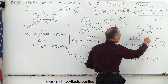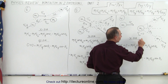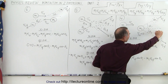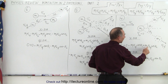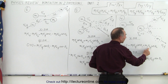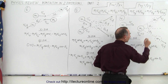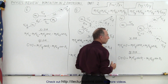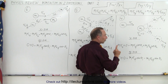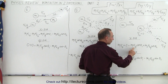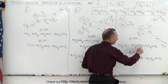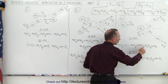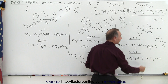For M2, the final momentum in the x direction will also be M2 times the final velocity times the cosine of that angle. Now notice there are four unknowns: V1 final, V2 final, cosine theta 1, and cosine theta 2.